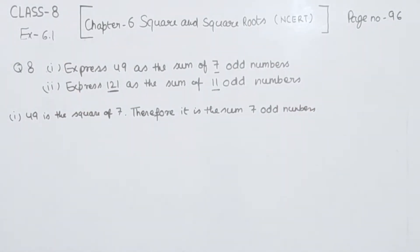I am going to write here, 49 equals 1 plus 3 plus 5 plus 7 plus 9 plus 11 plus 13. Counting: 1, 2, 3, 4, 5, 6, 7. So this is 7 numbers, and the sum of 7 odd numbers equals 49.